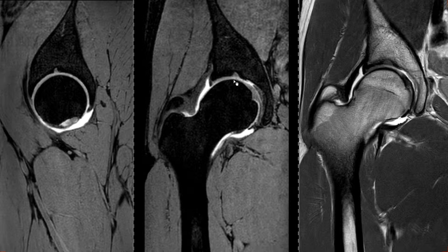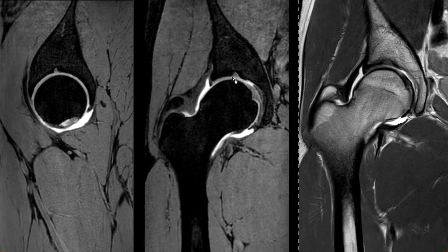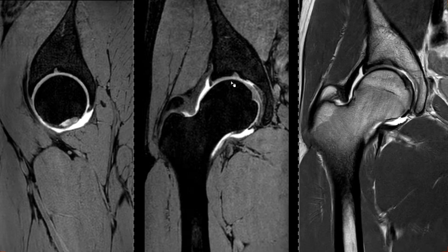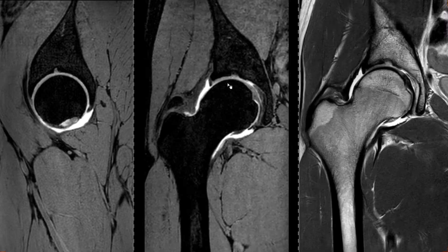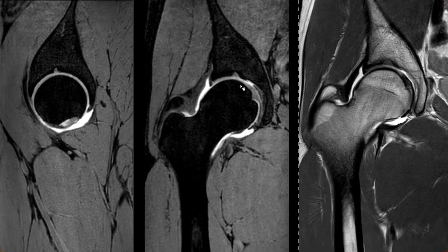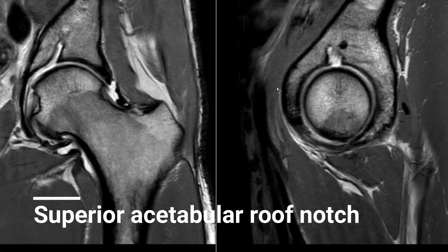If you observe several patients over a long period of time, you can sometimes see that a type 1 fossa eventually becomes a type 2 supraacetabular fossa — it eventually fills up with cartilage. That's at least one of the newer theories. It's a normal variant and it's present in up to 10% of all hip exams. Be very careful not to call this an osteochondral defect or osteochondrosis dissecans or any other pathology, because it's just a normal variant.